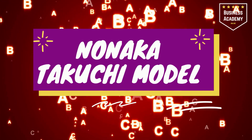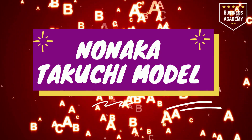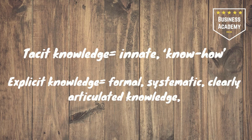Before we can get into the model and deep dive into that, we need to look at what the two types of knowledge are. There's tacit knowledge, which is innate know-how — things that you have in your brain. You gain it through experience over time. So if you've worked at your organisation for a while, you know which is the best person to go to in finance, who are more likely to pay your invoice, or you know which supplier will deliver on time and so on. All of this is in your head and can be hard to capture.